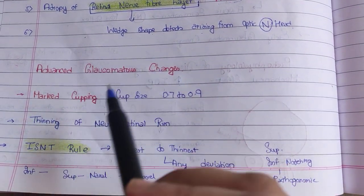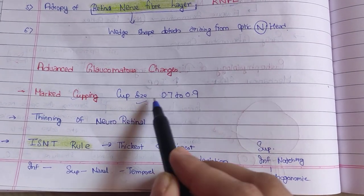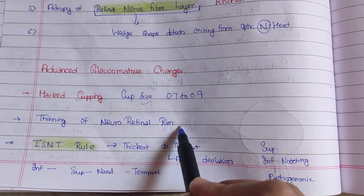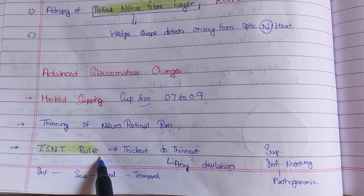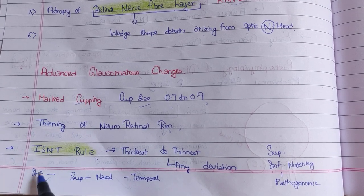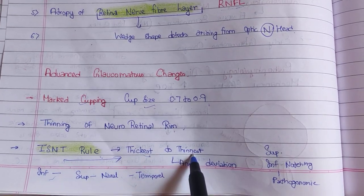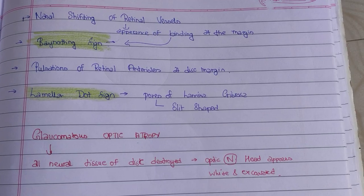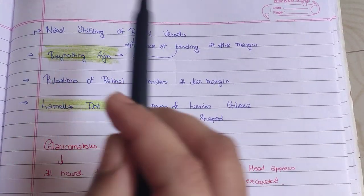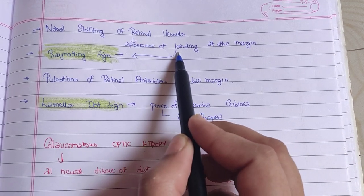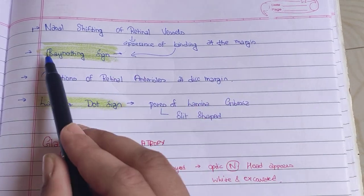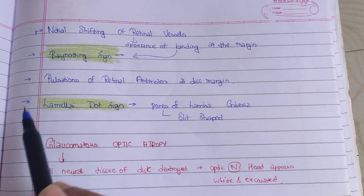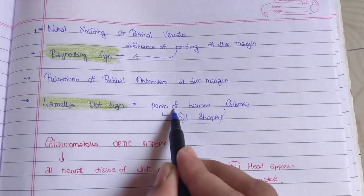Advanced glaucomatous changes: cupping becomes very marked, with cup size approaching 0.7 to 0.9. There is thinning of the neuroretinal rim. According to the ISNT rule, from inferior to superior to nasal to temporal, fibers should be thickest to thinnest; any deviation indicates glaucomatous changes. Nasal shifting of retinal vessels occurs, and vessels appear to bend at the margin — called the 'bayoneting sign.' Pulsations of retinal arterioles are seen at disc margins, and the laminar dot sign appears where pores of the lamina cribrosa become slit-shaped.